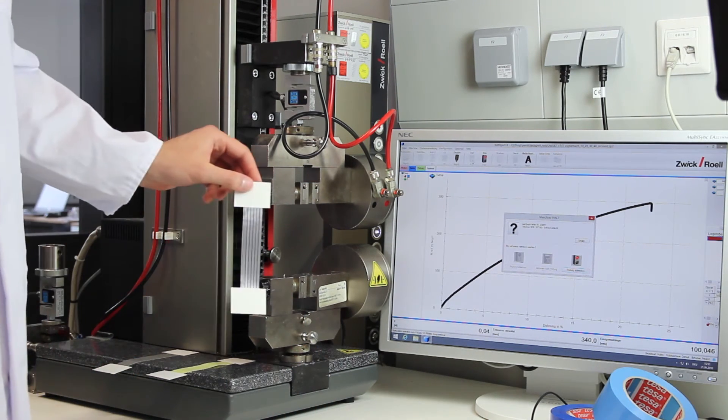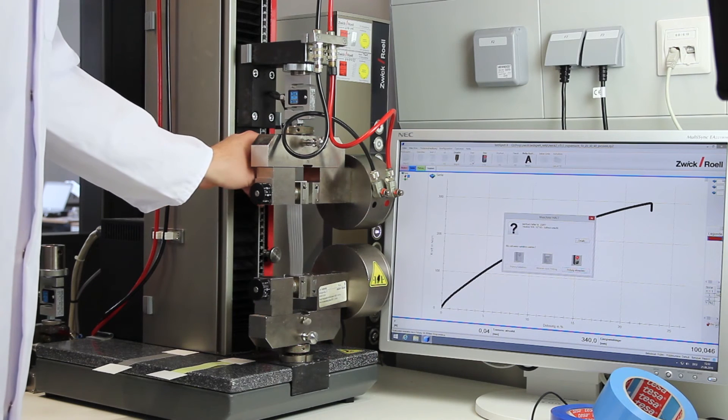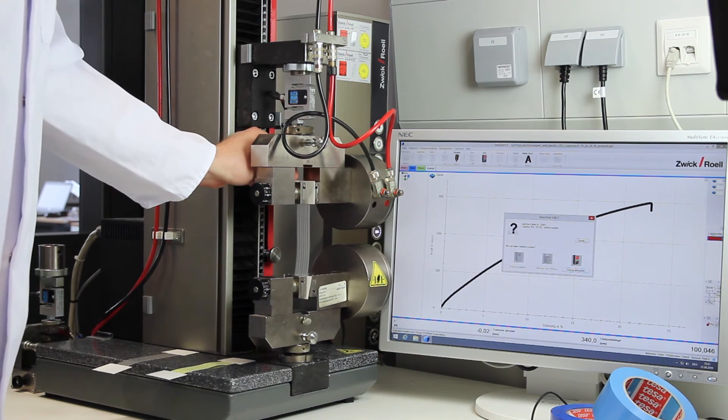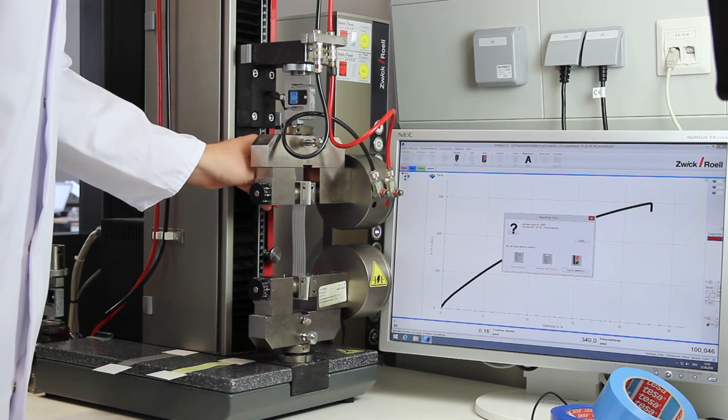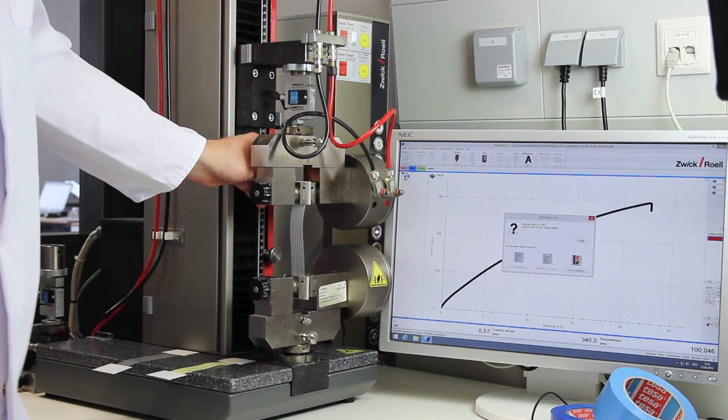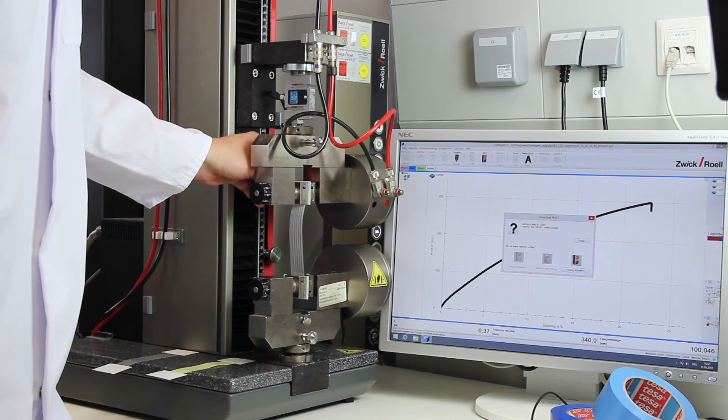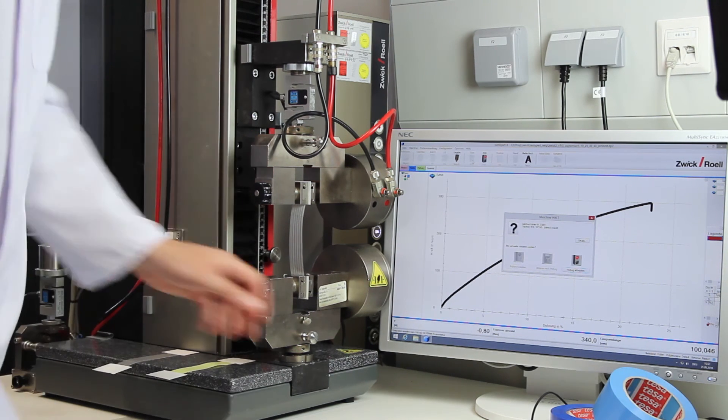In order to prove the special suitability of our strapping tapes for this application, we conducted the test under the same circumstances with the competitor's filament tape. Like the Tesar 4289, the competitor's tape was secured on both carton ends and also received a test load of 300 N per centimeter.